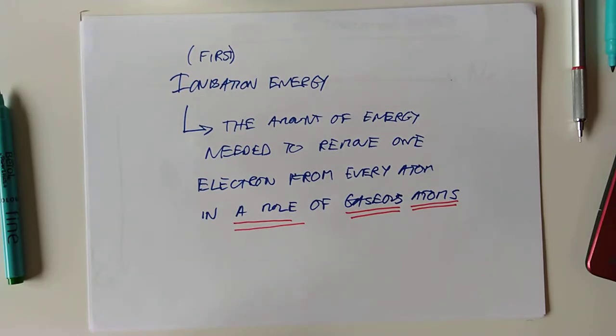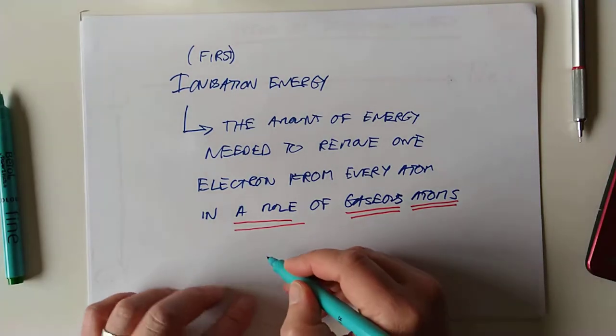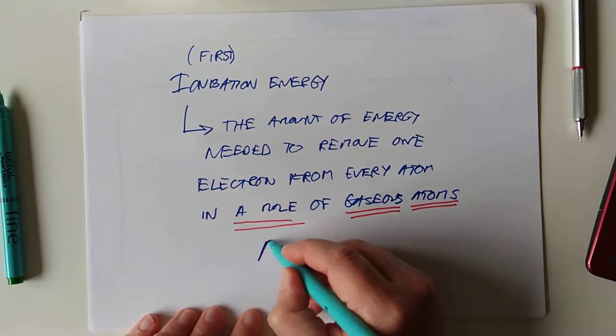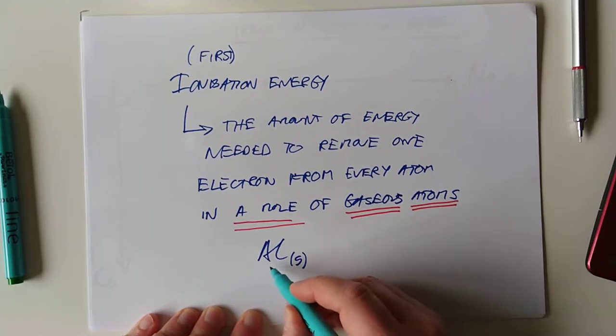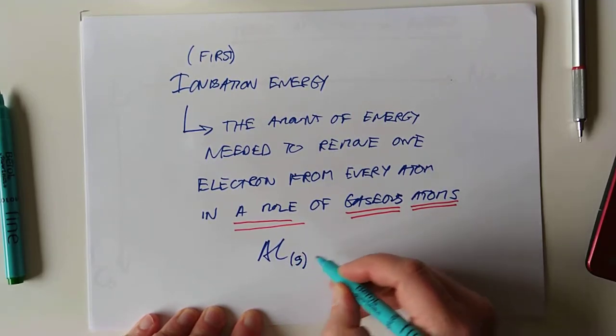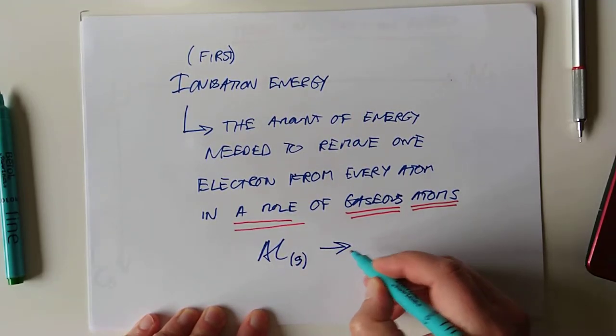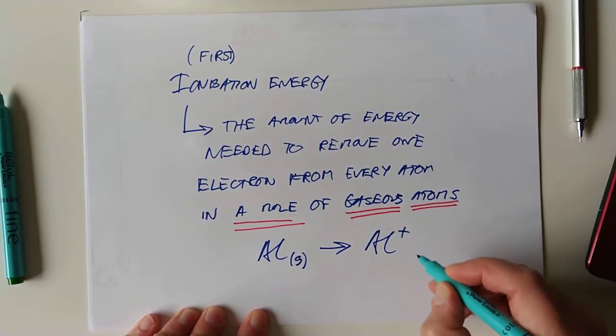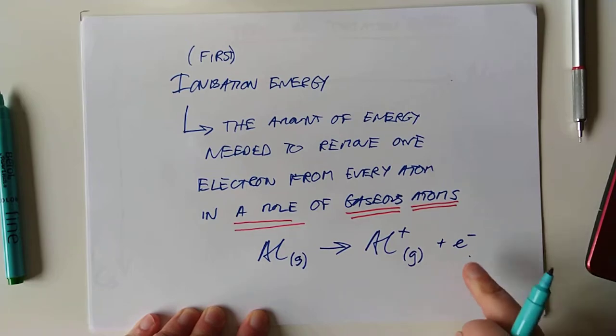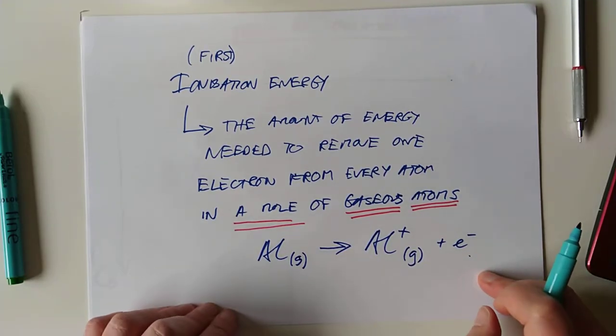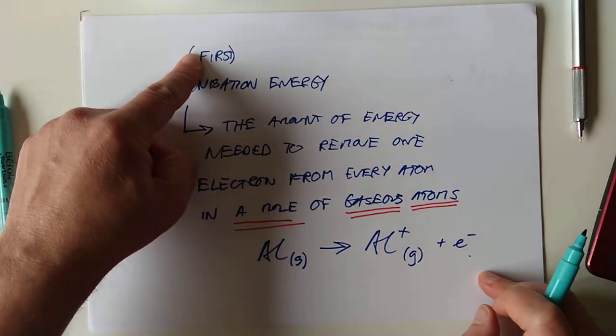How on earth do we write it? Well, we would probably write an example of this as being, say, aluminium. And it's got to be a gas. These are atoms, so that's fine. So aluminium gas changing into Al1+ gaseous, plus, of course, the electron that you stripped off. So that's how we would write the first ionization energy.